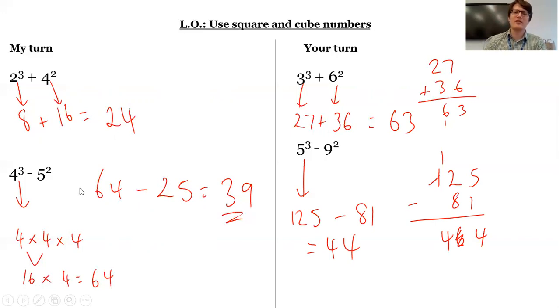Have a go now at your independent task. Again, notice with these, a little bit like when we've been doing inequalities with equations on each side. You need to work out, first of all, what is this value? What is this value? Then I can add them together.